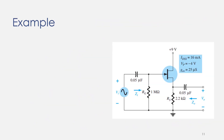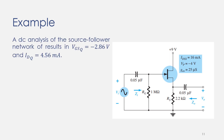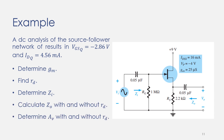Let's do a numerical example. This circuit is a source follower or common drain configuration. Three device parameters are given: IDSS = 16 mA, Vp = -4 V, and gos which is used to determine Rd. The Q-point values are provided: VGSQ = -2.86 V and IDQ = 4.56 mA. Using these values we will find gm, then Rd, then Z_input, Z_output, and Av both with and without the effect of Rd.